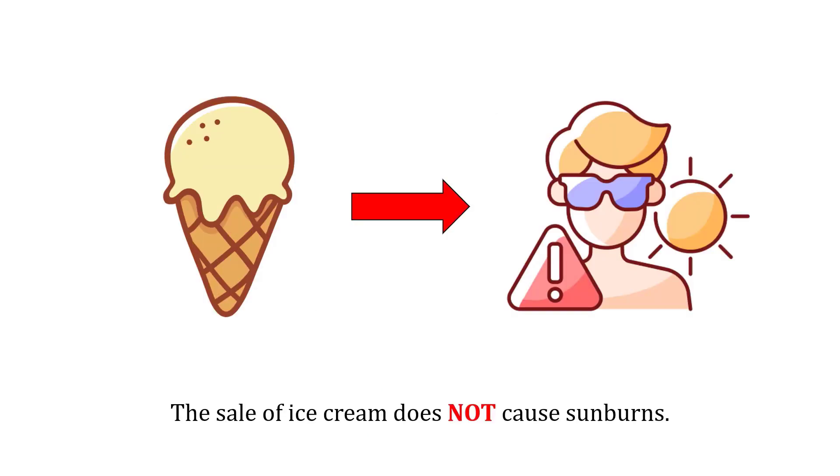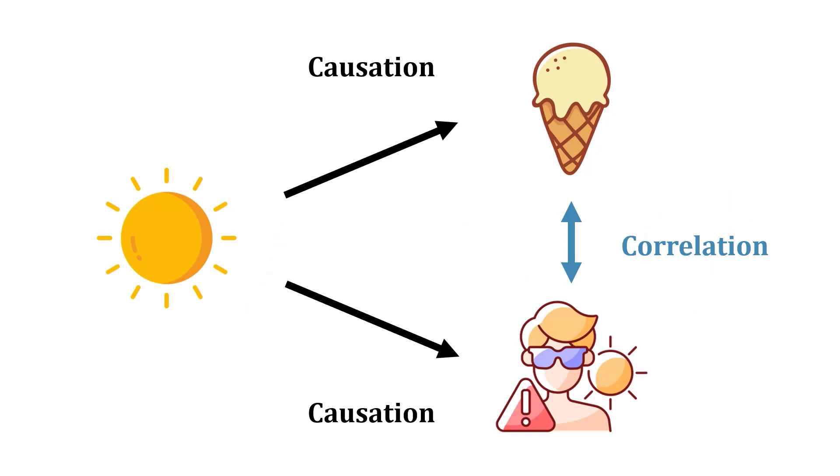Now we know obviously that the sale of ice cream does not cause sunburns, even though there's some correlation there. What we do know is that the sun causes sunburns - that's the root cause. And sun can cause a sale in ice cream cones. We want to make sure we understand the true root causes and understand that even if a correlation exists, it doesn't mean that one is causing a change in the other.